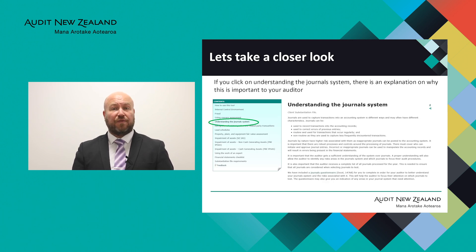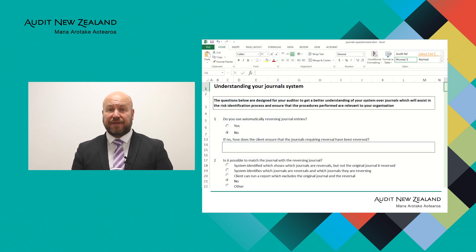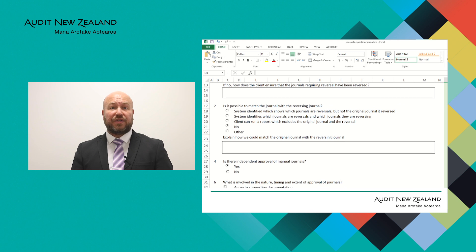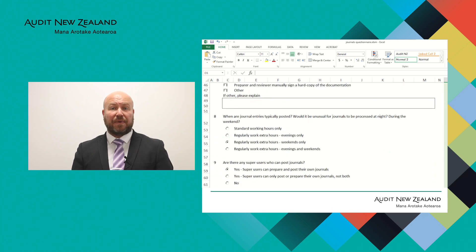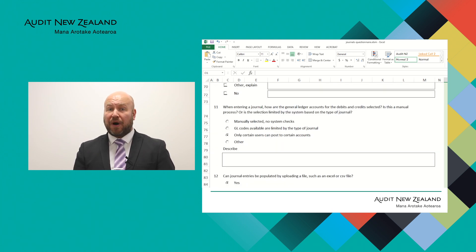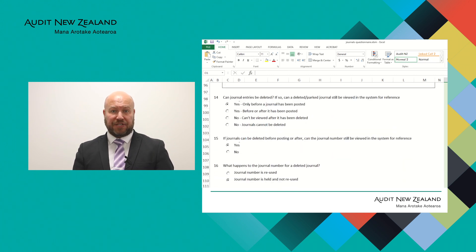After you've watched this video please take a look at the client substantiation file and find the questionnaire on understanding your journal system. You will see the questions are numbered and there are answers that you can select from by clicking on the scenario that is applicable to you, and there are boxes where you can write any additional information.